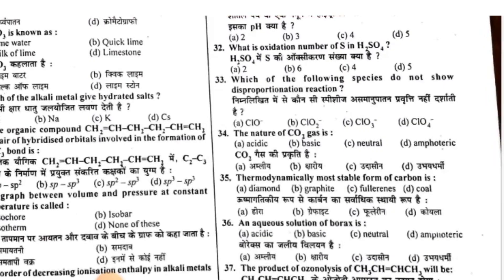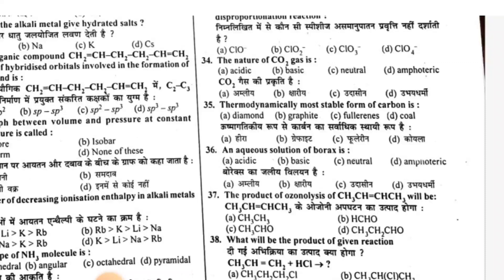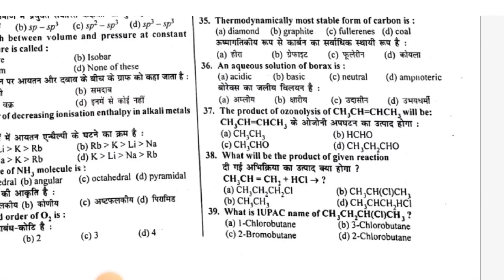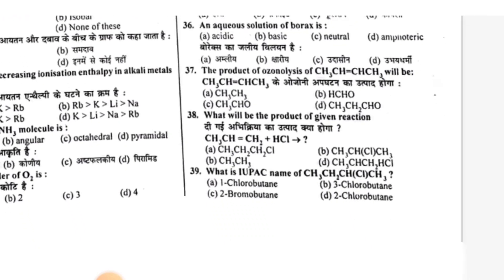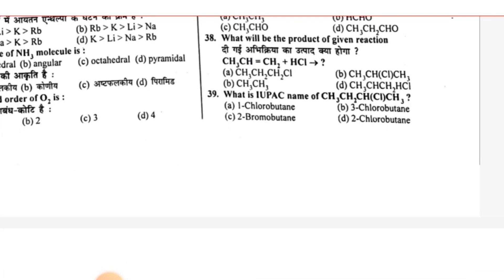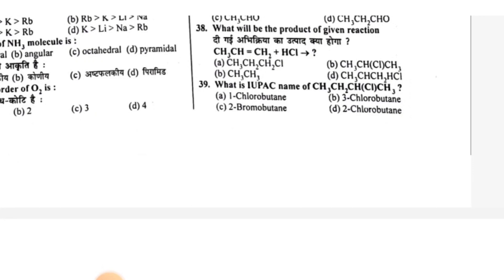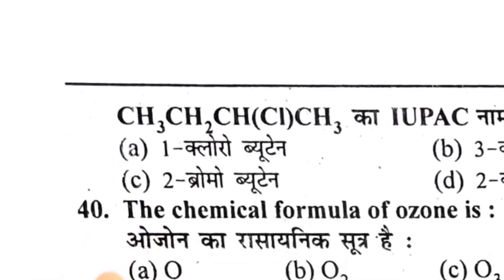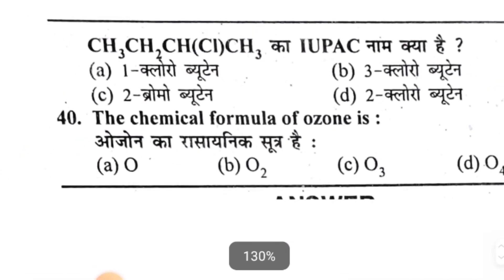Question 33 is D. Question 34: the nature of CO2 gas — the answer will be A. Question 35: thermodynamics, most stable form of carbon is B. Question 36: an aqueous solution of borax, answer is B. Question 37 answer is D. Question 38 answer is A — CS2, Cl. The answer will be 2-chlorobutane. The answer will be O3.